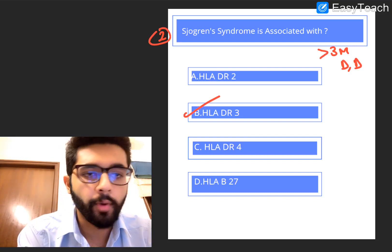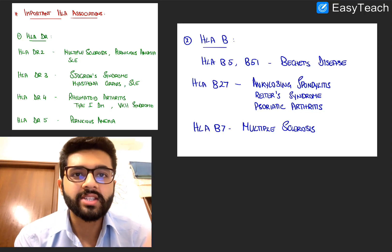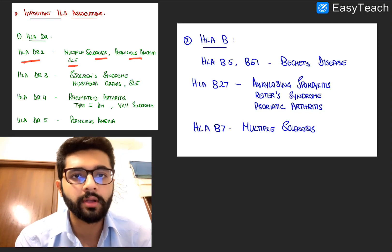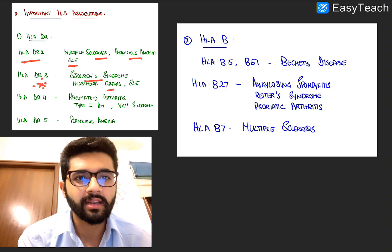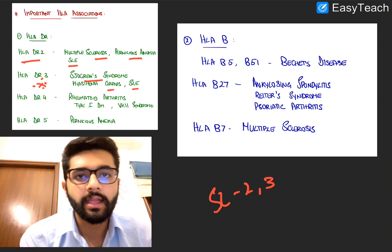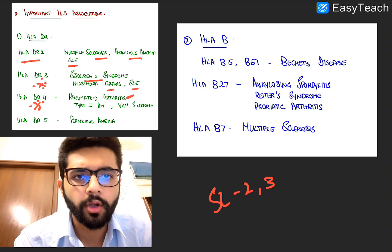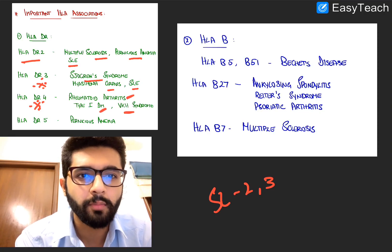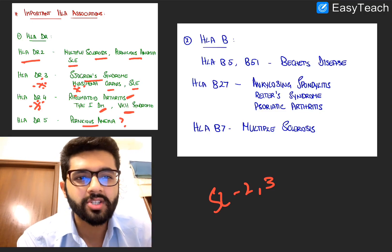Let me go through the important HLAs from an exam point of view. HLA-DR2 is associated with multiple sclerosis, pernicious anemia, and SLE — not too important. Very important is HLA-DR3, seen in Sjögren's syndrome, sometimes myasthenia gravis, and SLE. SLE has both DR2 and DR3. The most important HLA overall is HLA-DR4, which is seen in rheumatoid arthritis and Type 1 DM — most importantly HLA-DR4 for rheumatoid arthritis.